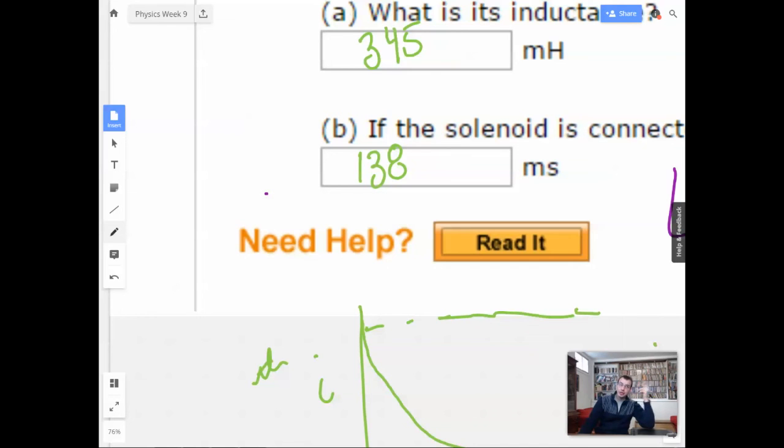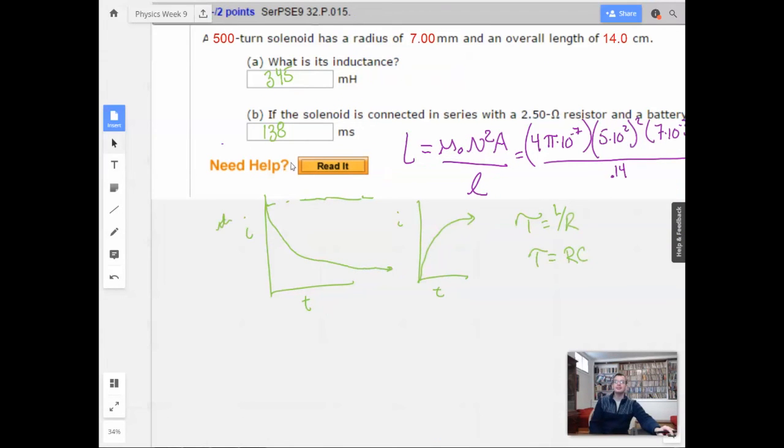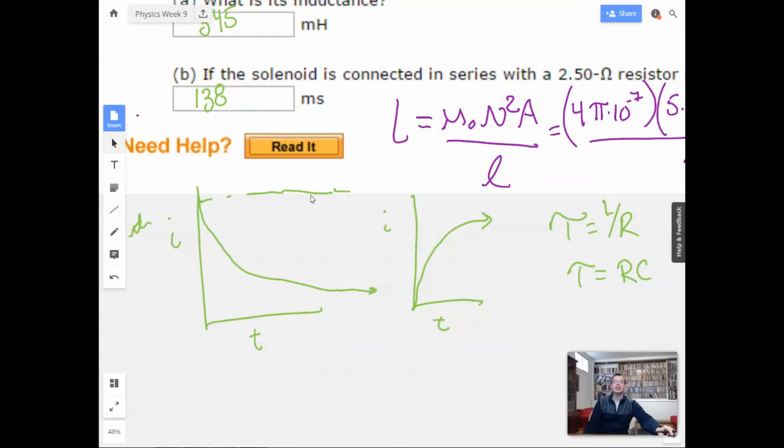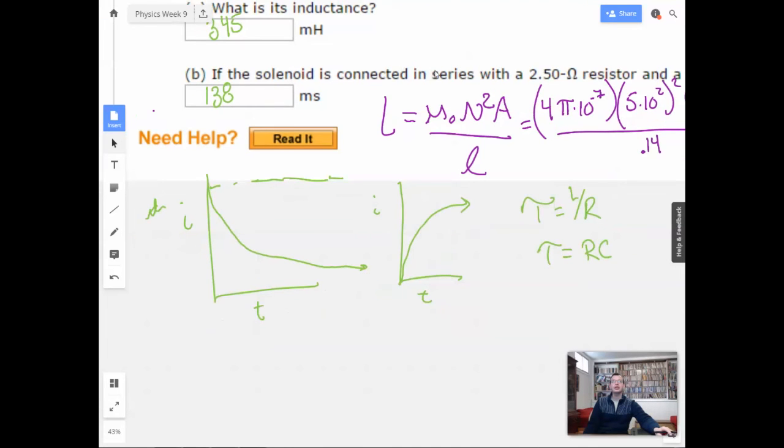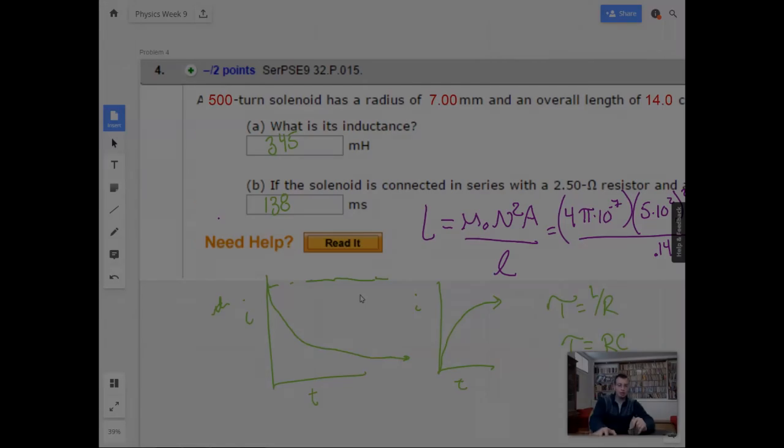138 milliseconds. So it's pretty quick. So if general rule in the Navy, if you have five time constants go by, then you're going to be, five half-lives. I think it's five half-lives. Never mind. So 138 milliseconds. Got it. And then we'll use that in equations later to figure out how much it actually decays or builds up. 345 divided by 2.5. Yep. I'm good at that. All right. That's problem four.